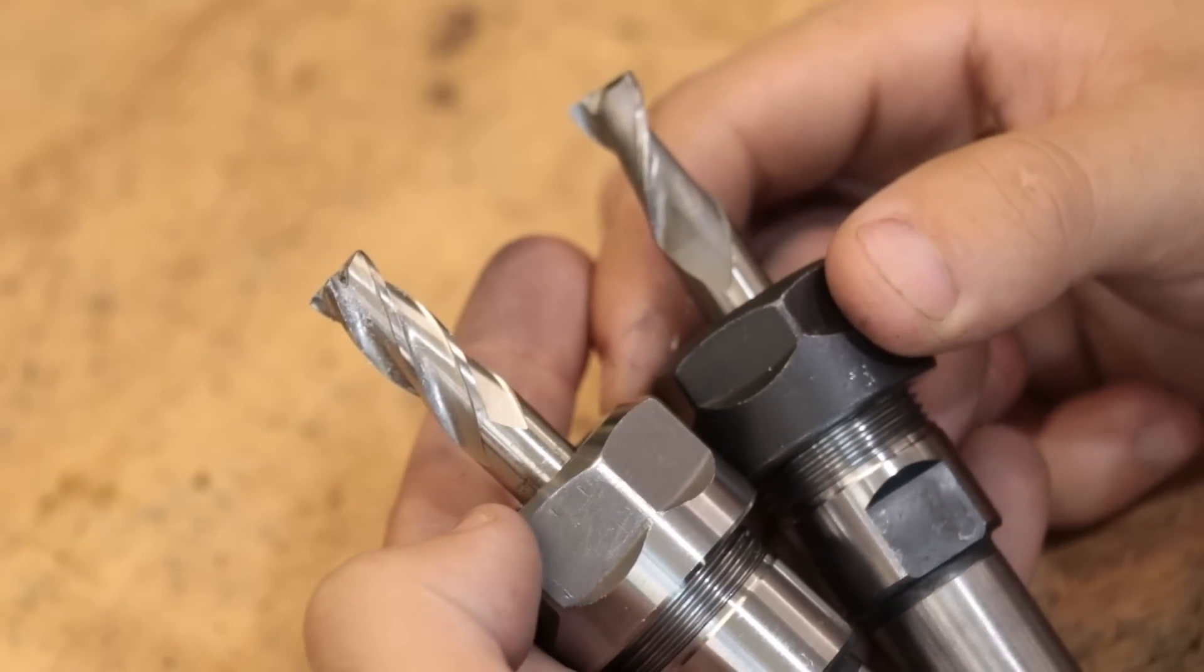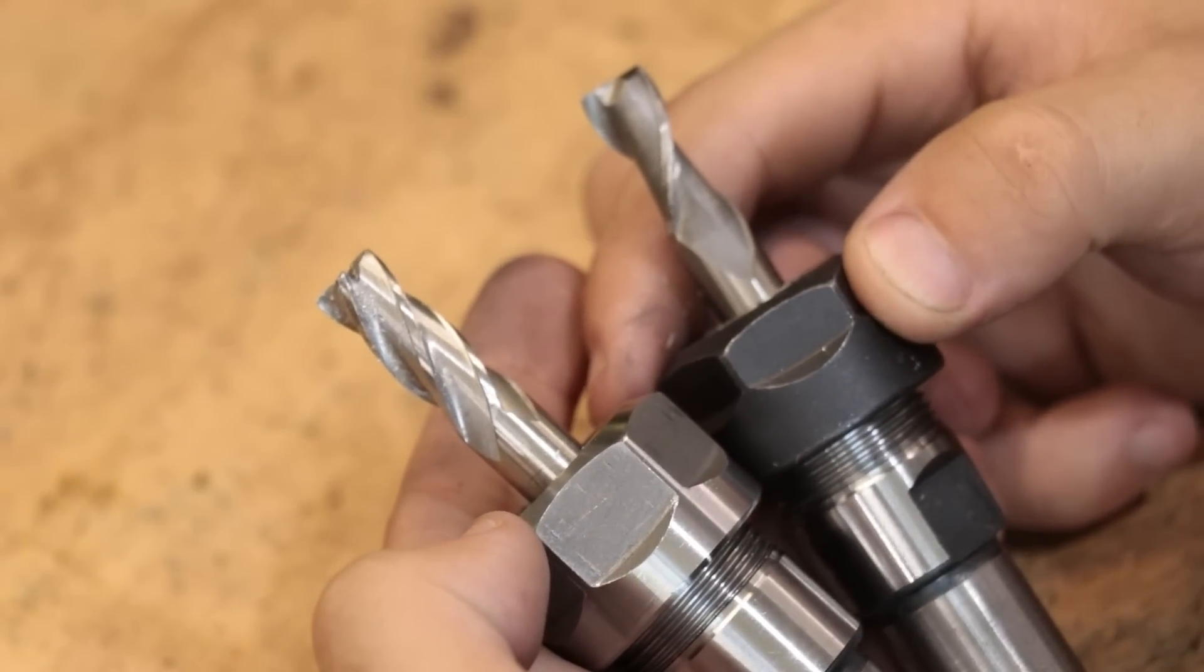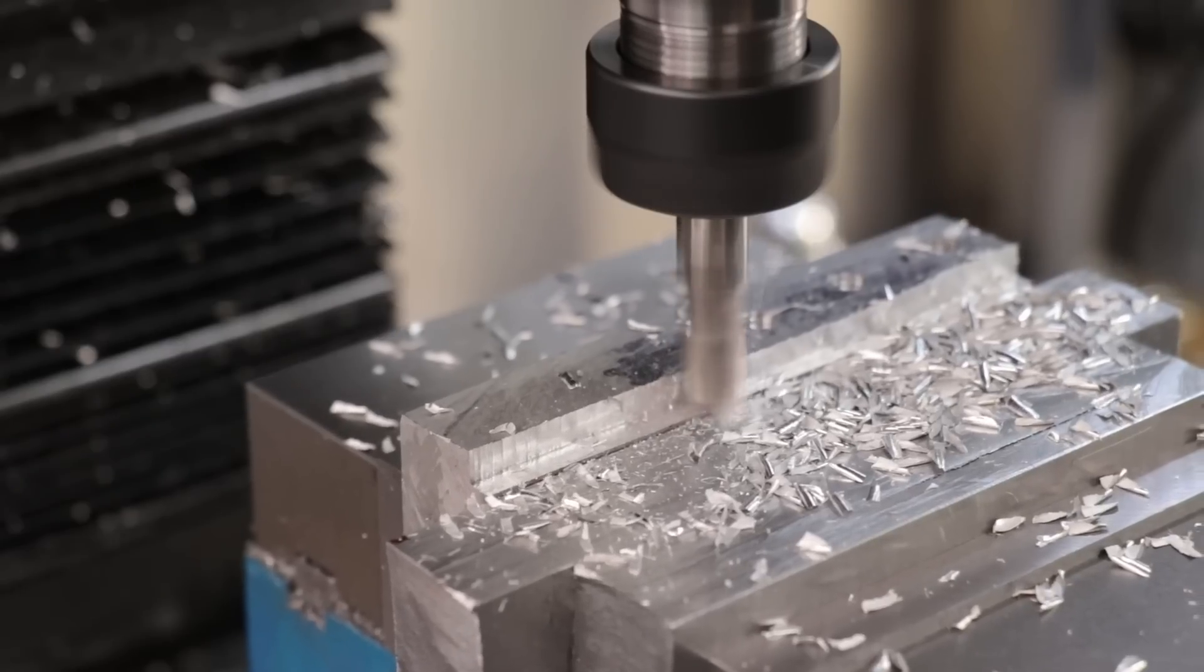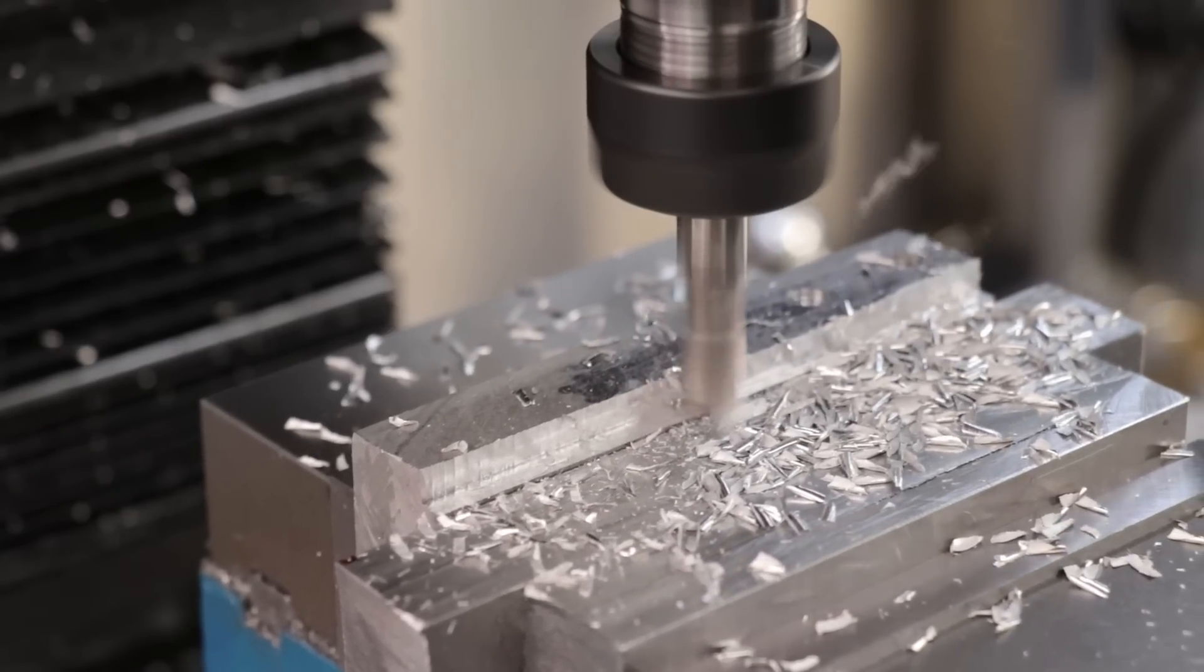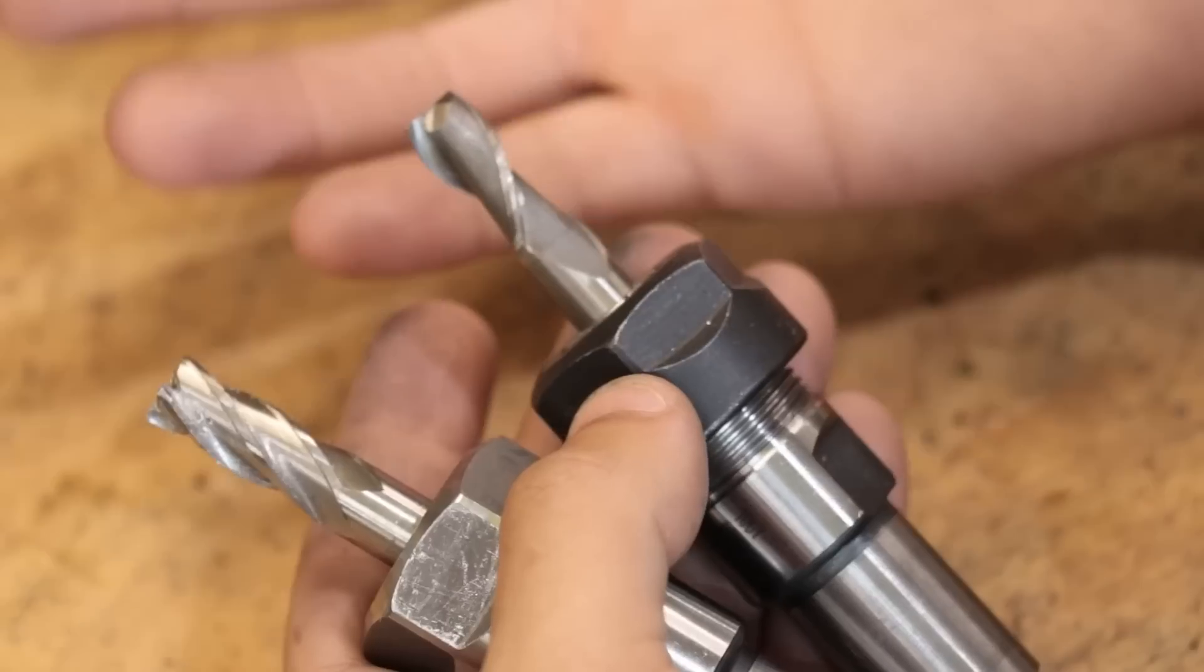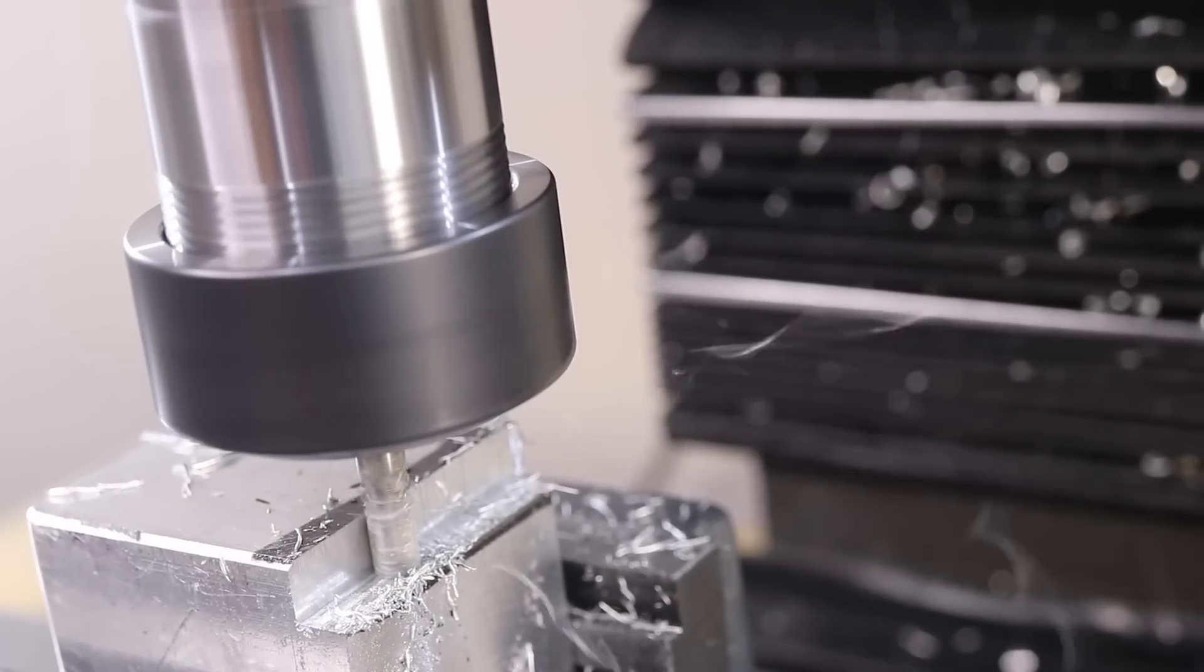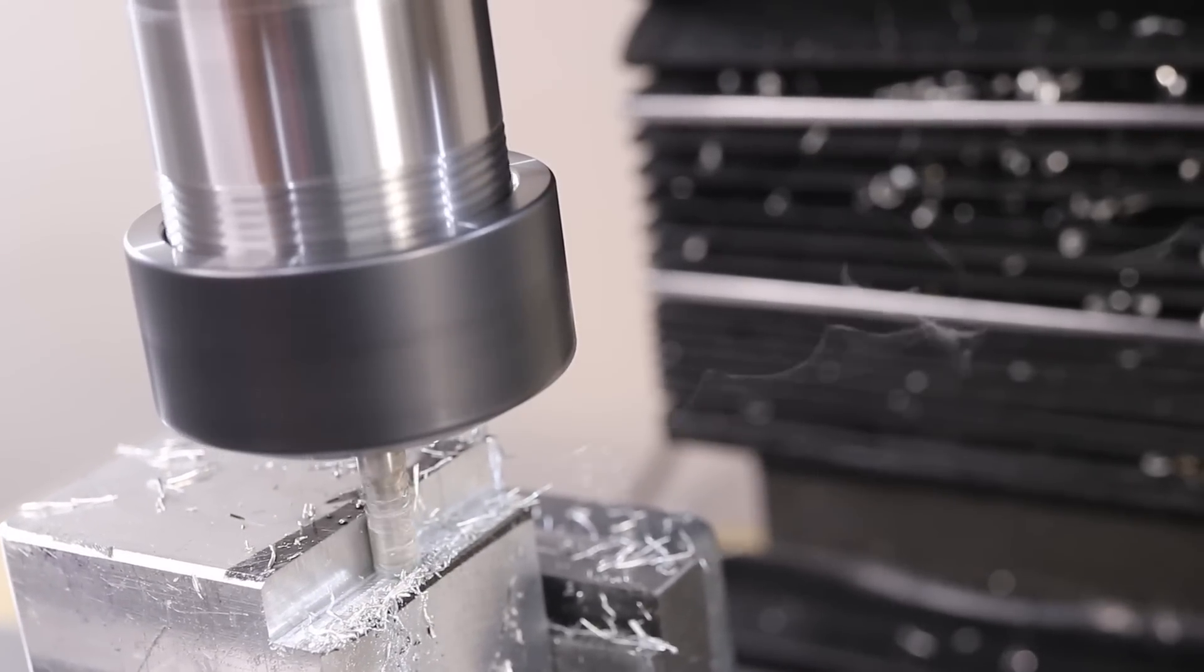It's also worth noting that when milling aluminum, it's best to use a 2-flute end mill, especially when roughing. The chips can easily gum up the flutes on a 4-flute end mill and stop it from cutting. Although when I do my finishing passes, I tend to use a 3 or 4-flute end mill because it leaves a better surface finish.